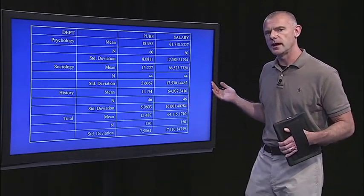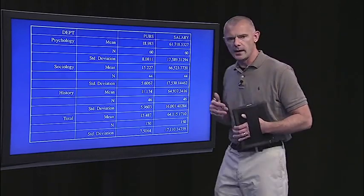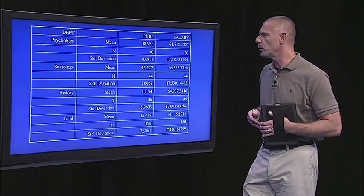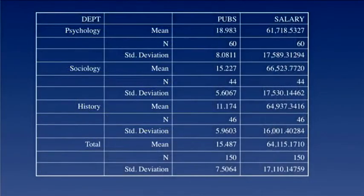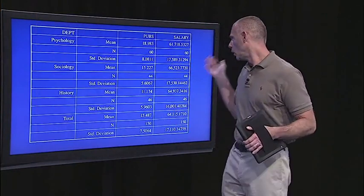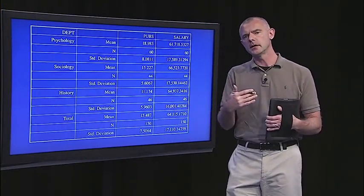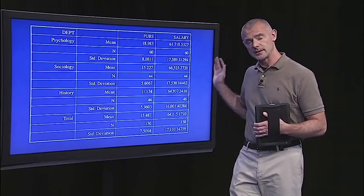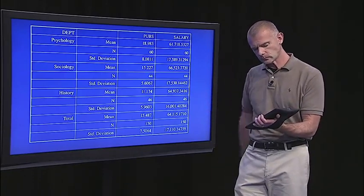Here are some descriptive statistics so you can get a feel for what to expect in the output. We have professors from three different departments, and we're looking at their average salary and average number of publications. In the psychology department, the average salary is about $62,000. Sociology is a little higher, and history is also higher but not quite as high as sociology. For publications, psychology has the highest average at 18.9, sociology is at 15.2, and history is down at 11.1. But the question here is whether the relationship between publications and salary changes as a function of department.